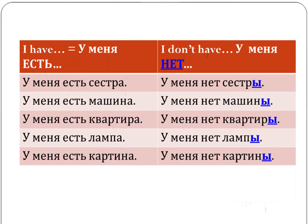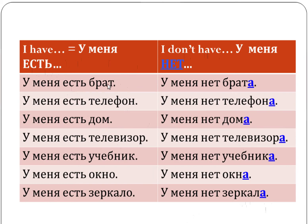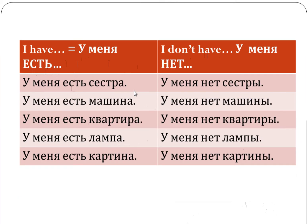I'm hoping that you're thinking of the gender of these nouns. On the first slide we had masculine words ending in a consonant: брат, телефон, дом, телевизор, учебник — five masculine words that added an -а ending. These two words are neuter and they dropped the -о ending and went to -а. So masculine and neuter words change their ending to -а. Here we have an -а ending that signals feminine gender, and feminine words dropped the -а ending and went to -и.